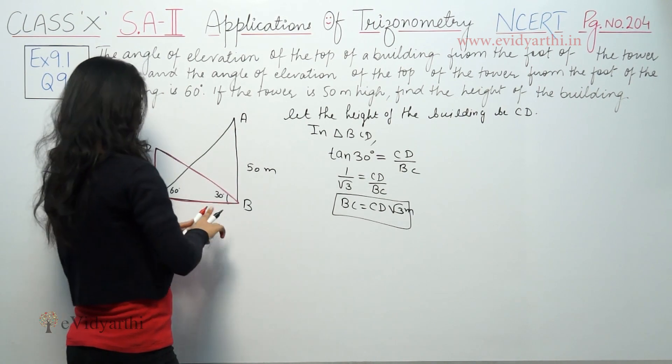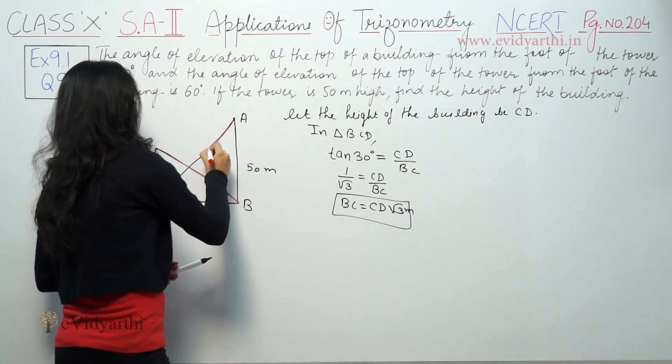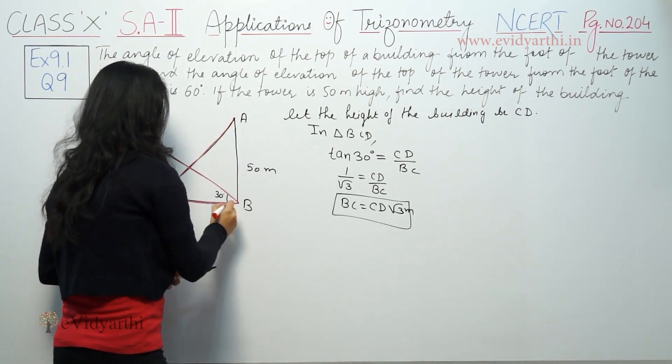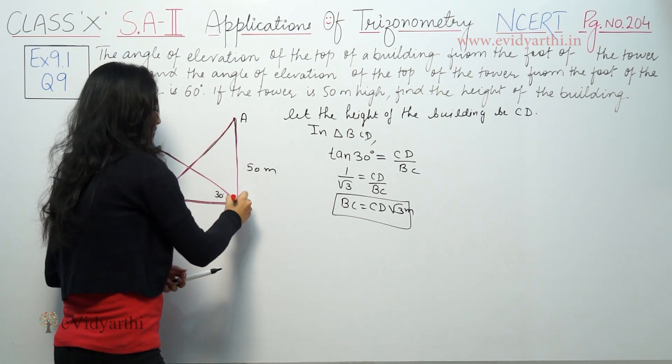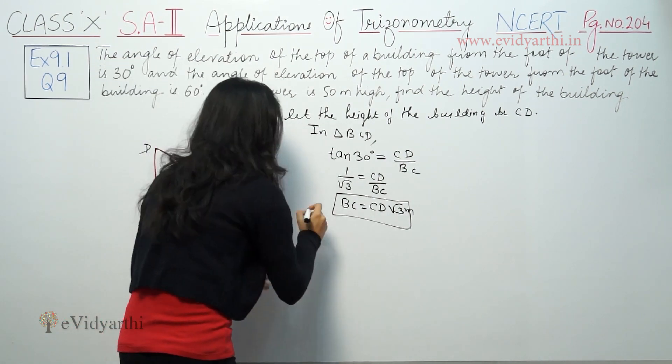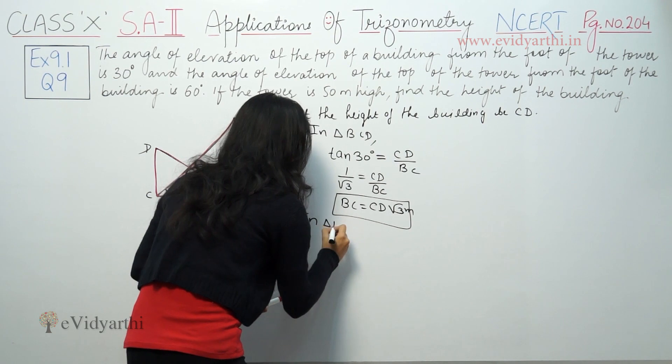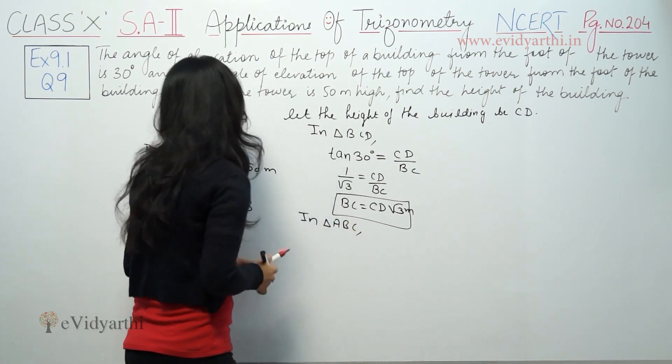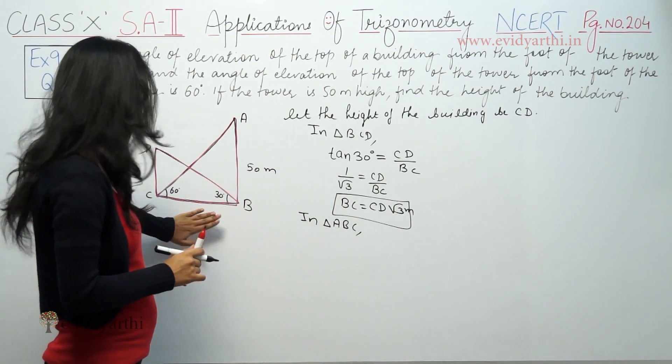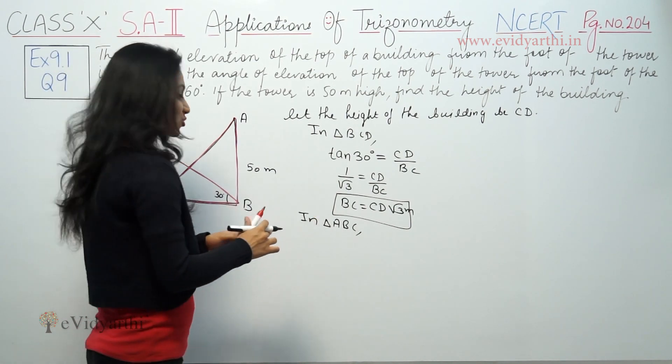Now let's use the other triangle, which is ABC. In triangle ABC, we have perpendicular and base, so we use tan.